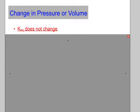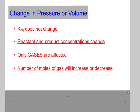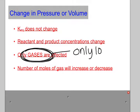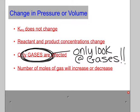Our third and final stress is change in pressure and volume. Because temperature is constant, Keq doesn't change — but the concentration of reactants and products will change. Only one state of matter is affected by a change in pressure and volume: gases. Solids, liquids, and aqueous solutions don't change when you change pressure. So when we look at change in volume or pressure, you only look at gases. This is the number one mistake — you'll try to look at the entire equation, but all you've got to do is count up the moles of gas on either side.